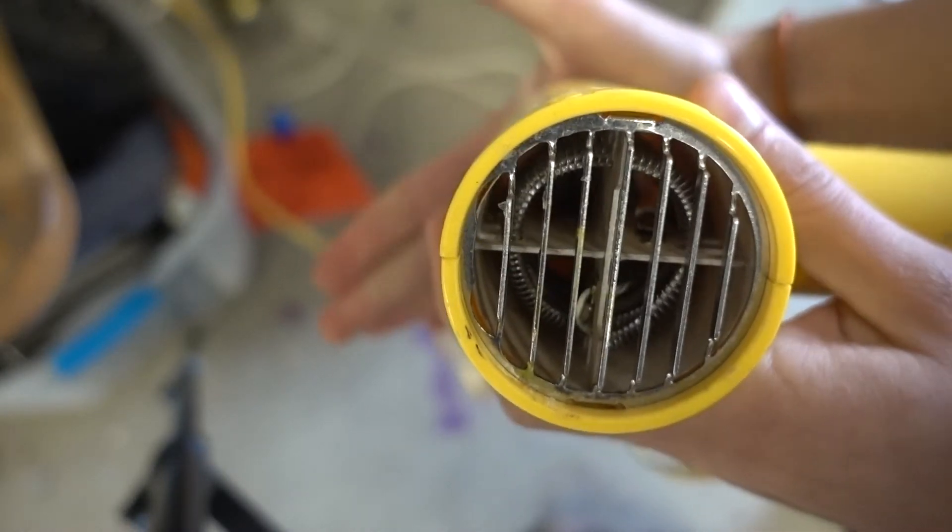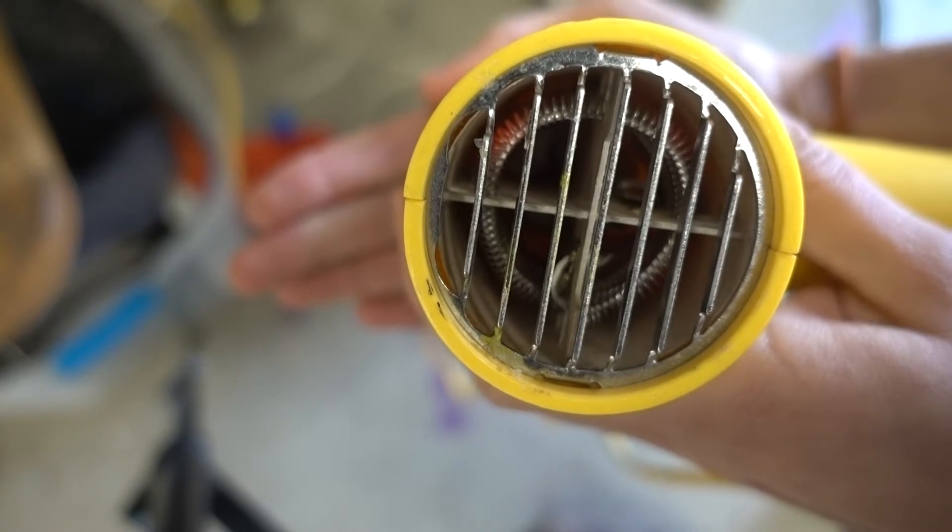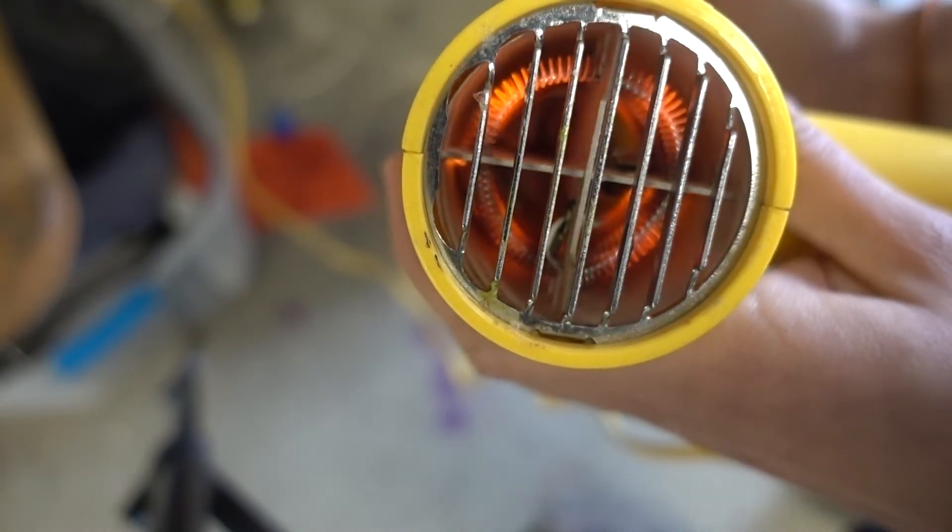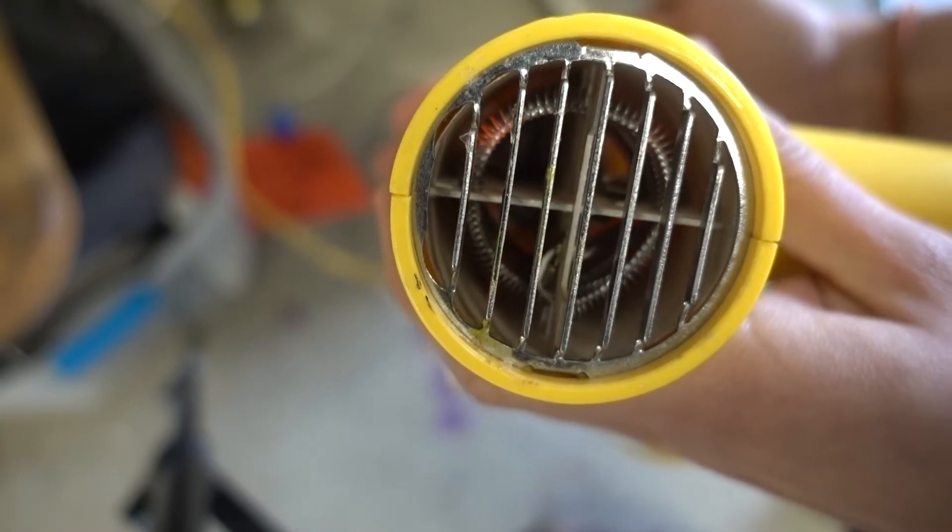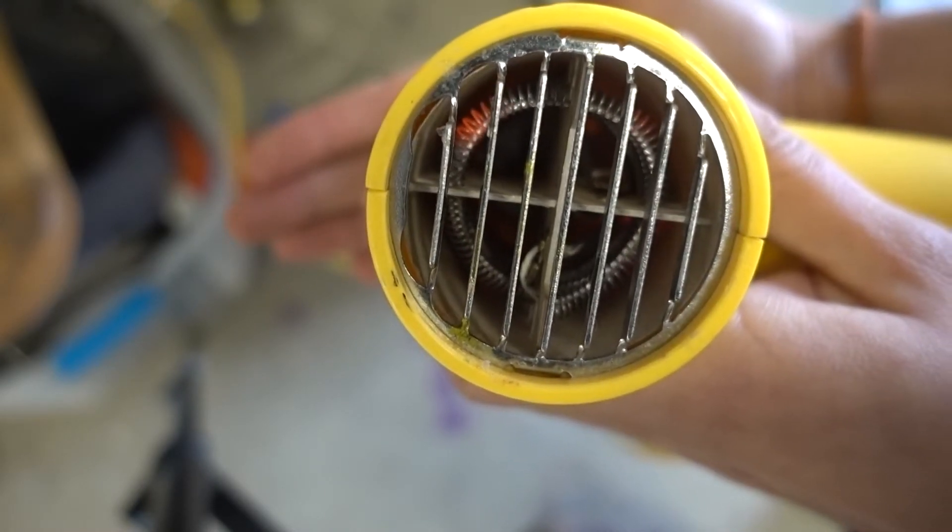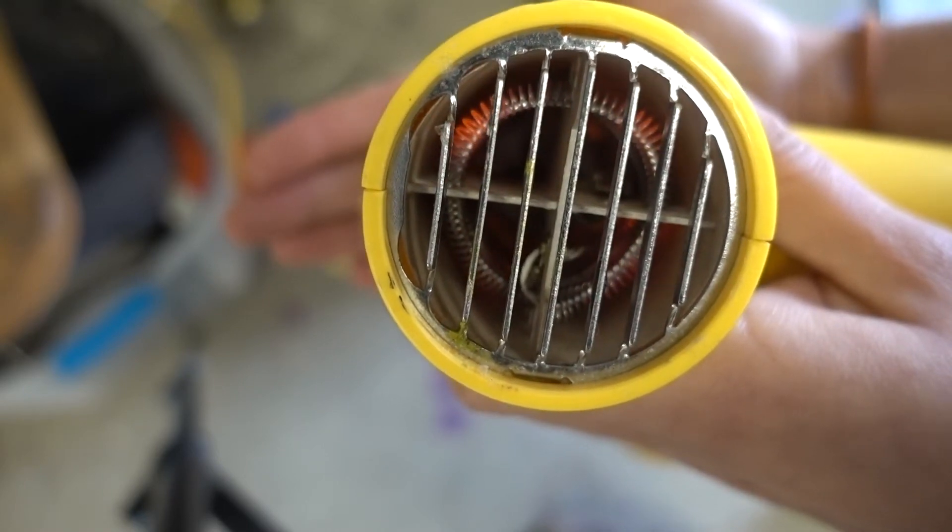However, if we block that airflow and there's no way to disperse the heat you'll be able to see the nichrome glow orange red hot as that electricity passes through it. Now this is definitely not something you should be trying at home. That's one of the reasons we have a Free Science Workshop.